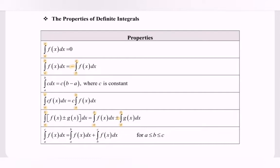The final property: integrate the function f(x) with respect to x for the limits a to c, which is equal to the integral of f(x) with respect to x from a to b, plus the integral of f(x) with respect to x from b to c, where b is greater than or equal to a and less than or equal to c. Thank you for watching.